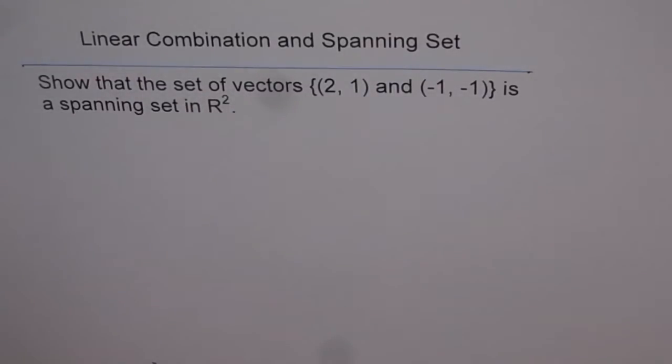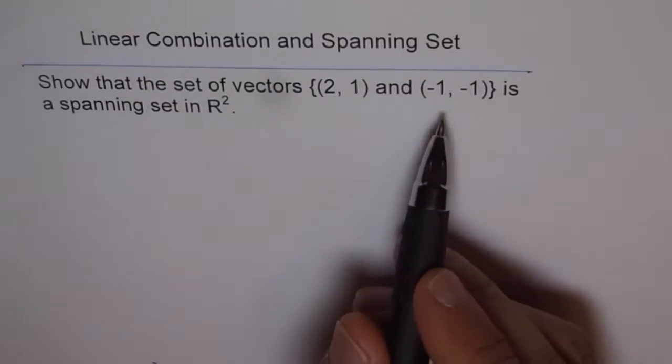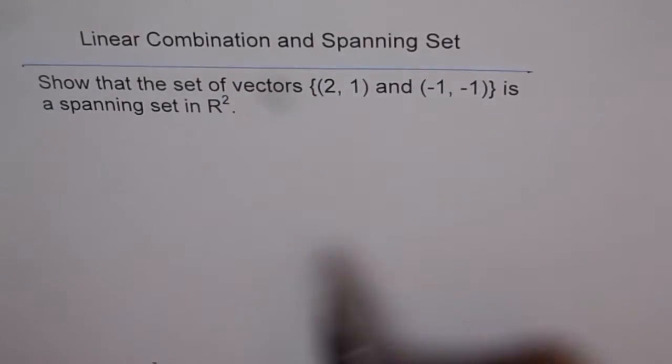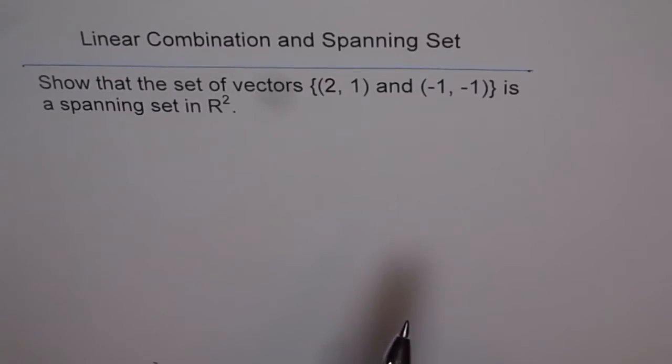Now what does that mean? It really means that you need to find a linear combination of these which could represent any vector in R². That is what it means. So let's put it in an equation form.